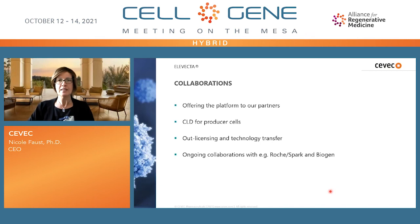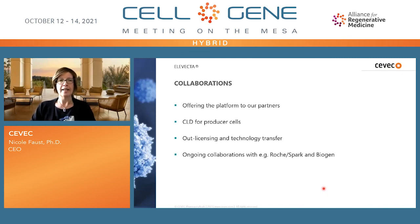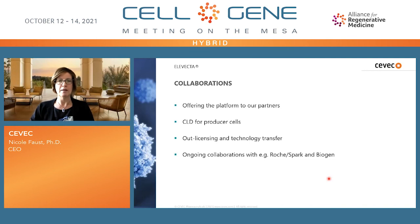So how do we work with clients and partners? We don't develop our own products — rather, we offer our technology platforms. We perform cell and process development for Elevecta producer cells and also offer our unmodified CAP cells for AAV production, including aliquots of the GMP cell bank. In addition to development services, we provide tech transfer for cell handling and the upstream process, and clients can use these cells under a license to the Elevecta technology or to the CAP cells. Ongoing public collaborations include those with Spark Therapeutics and Biogen.